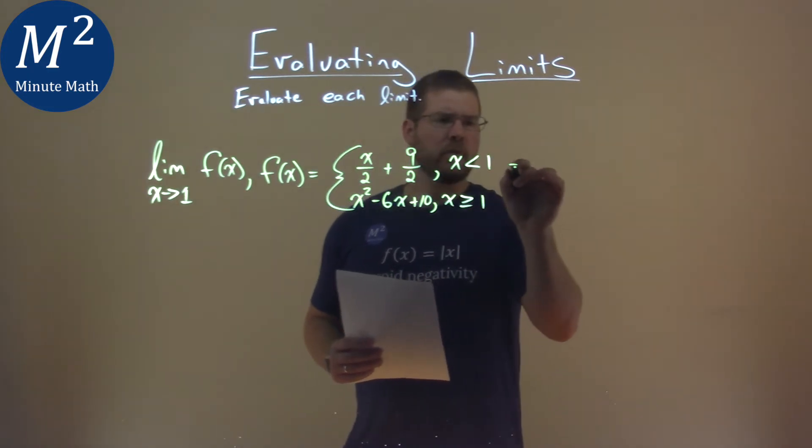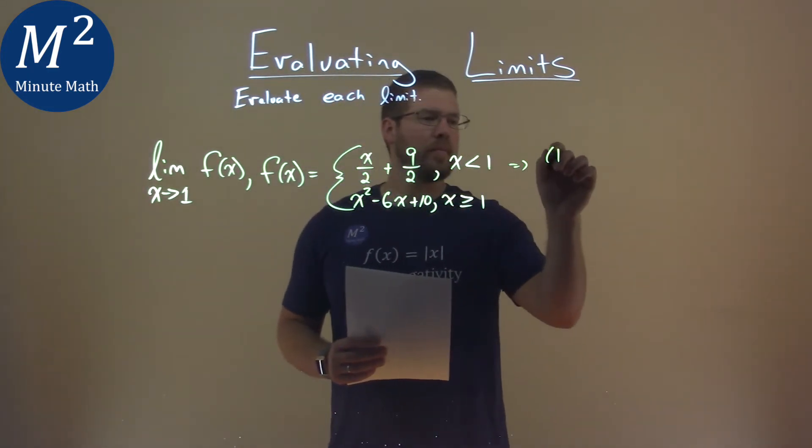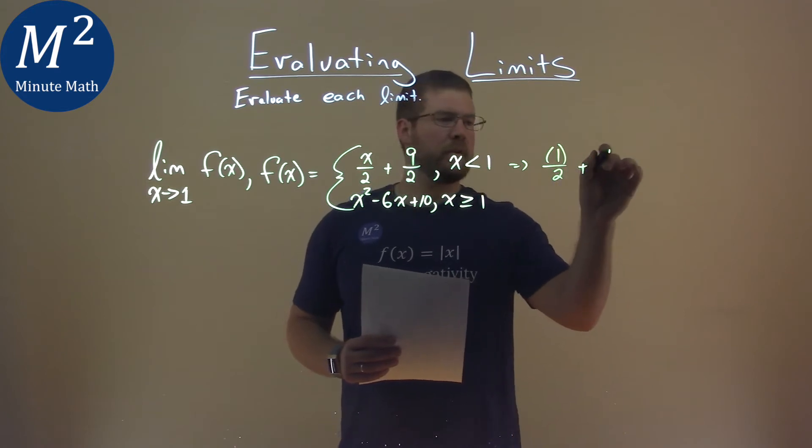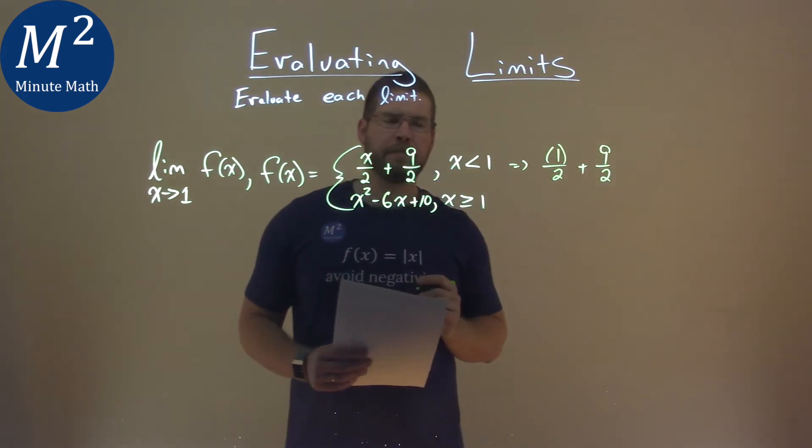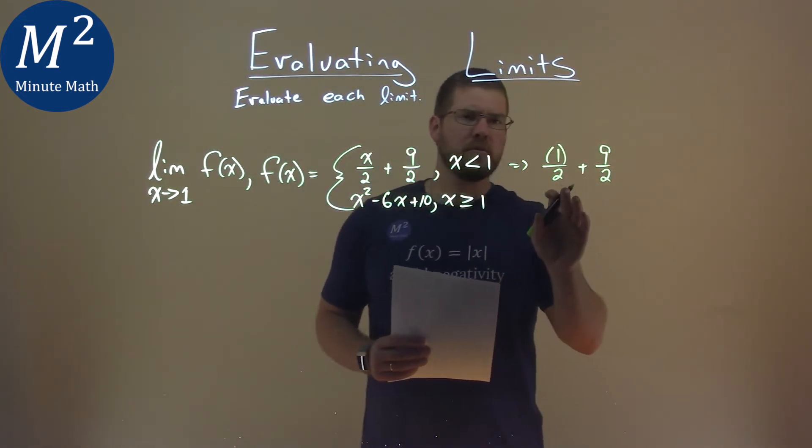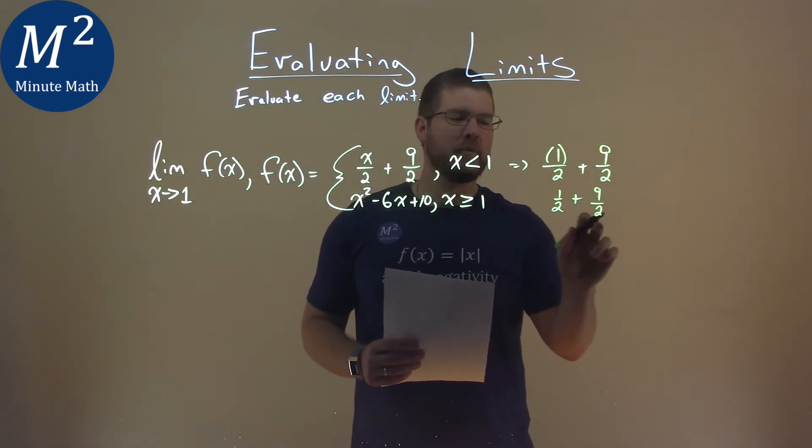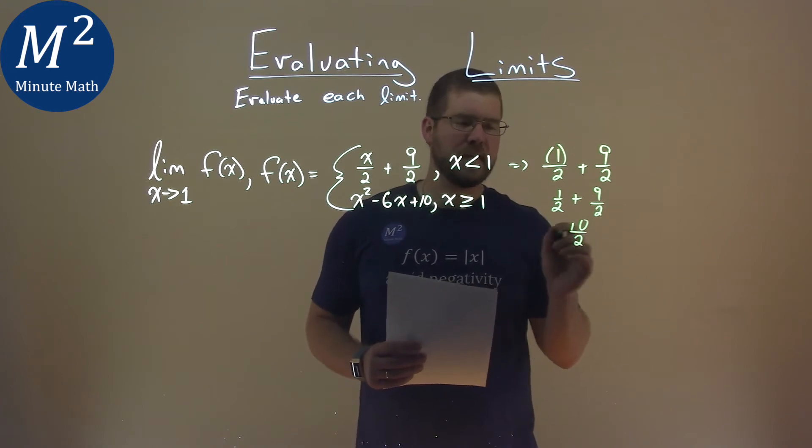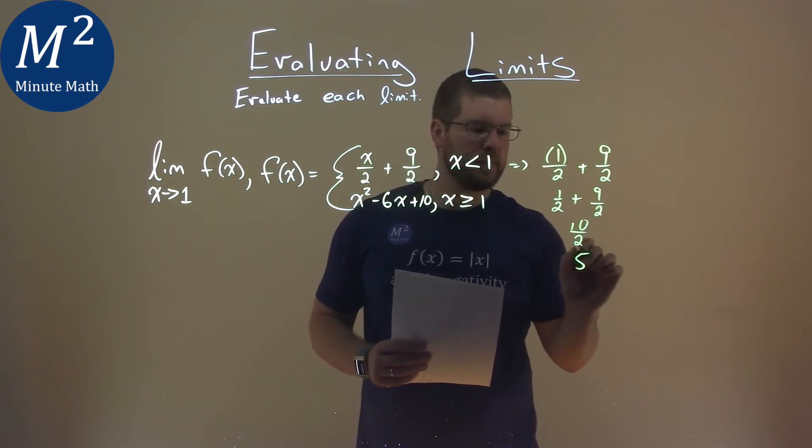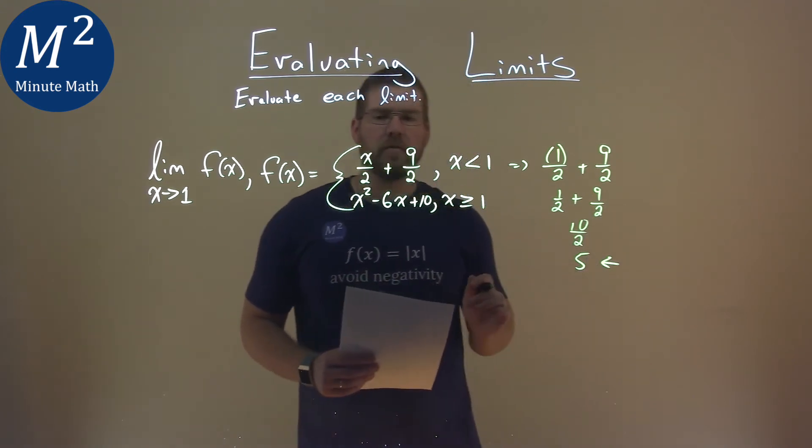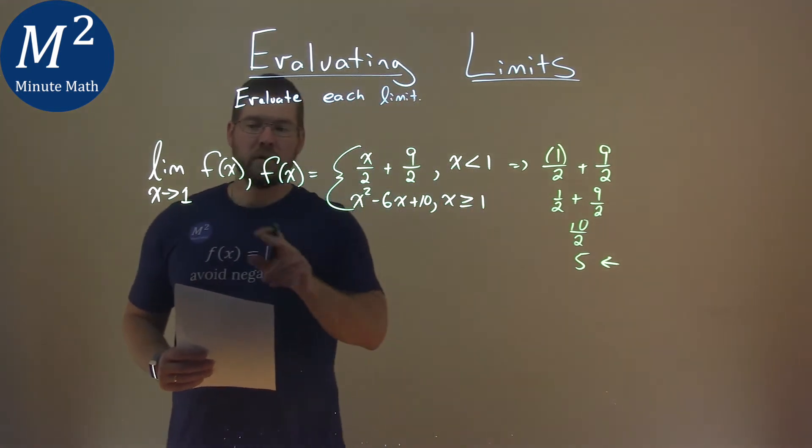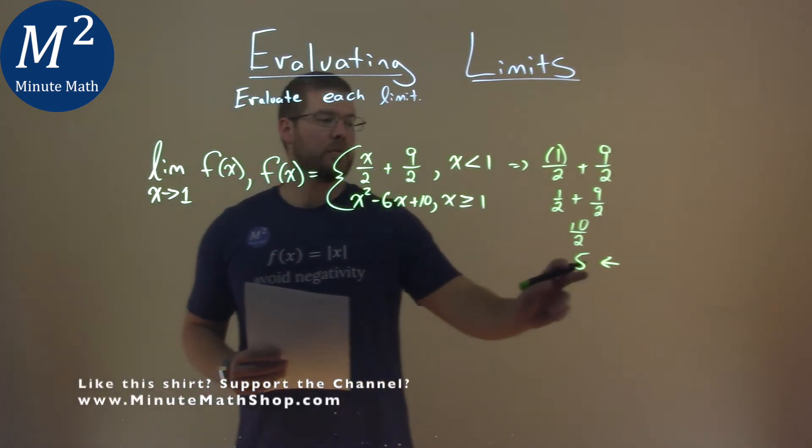For the first one, let's plug in 1 for x. We have 1/2 plus 9/2. Well, 1/2 plus 9/2 is 10/2, and 10 divided by 2 is 5. So from the left, if we approach 1 from the left, we approach 5.